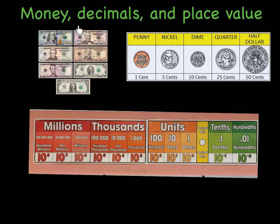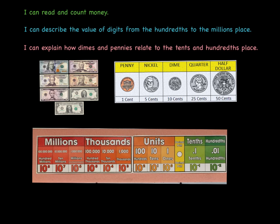Today's lesson is on money, decimals, and place value. Our goal is to figure out how they are related. We have some pictures of money and a place value chart. The first goal is to read and count money — being able to look at a given amount, know what bill or coins are present, such as a penny, nickel, dime, quarter, or half dollar, and count them up.